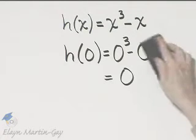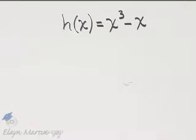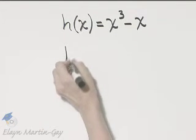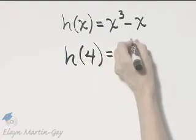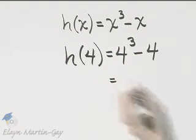And let's find one more function value. Let's find h of 4. How do we find h of 4? Everywhere there's x, we put 4. So that's 4 cubed minus 4.